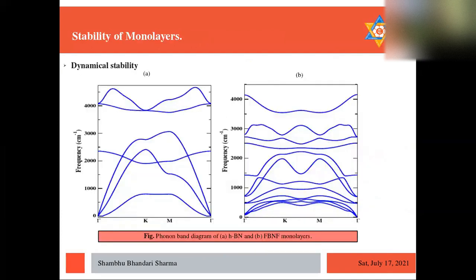And further, we test the dynamic stability and we found that there is no imaginary bands, phonon bands in both pristine and fluorinated structure, F-h-BN and h-BN, and we confirm that both structures are dynamically stable.